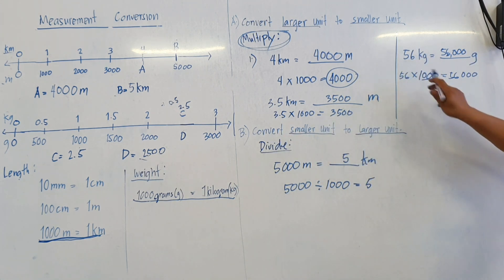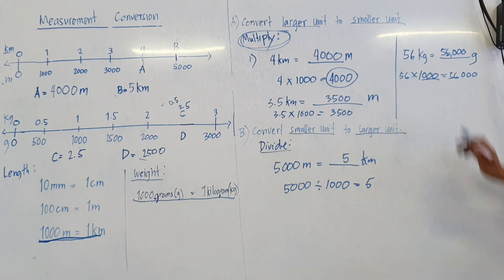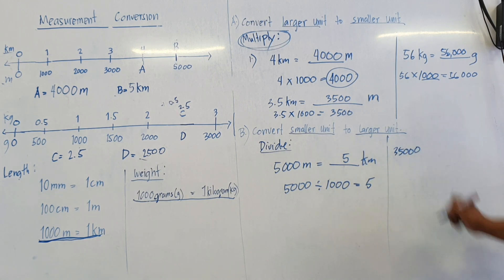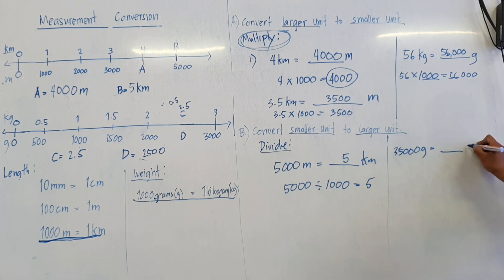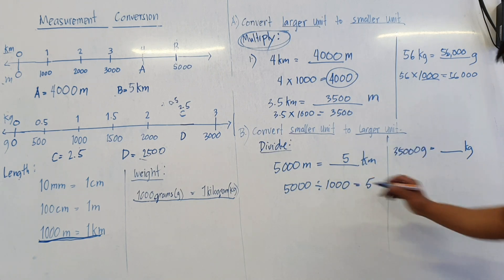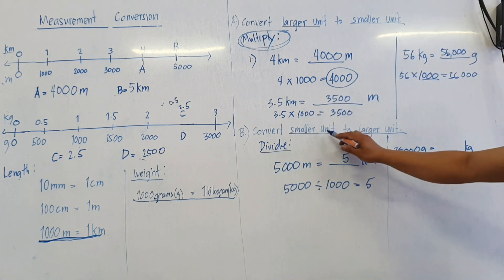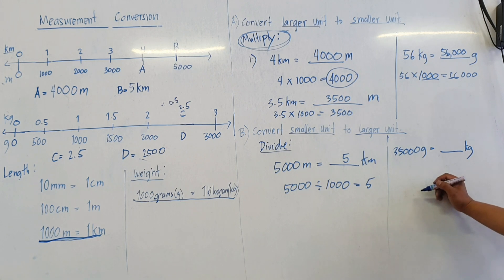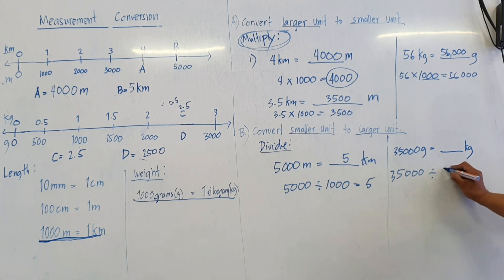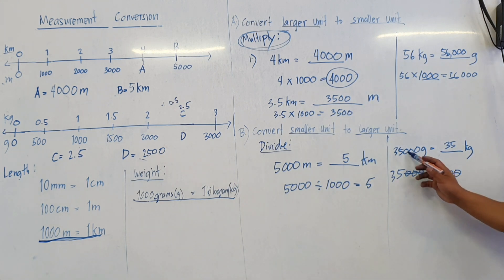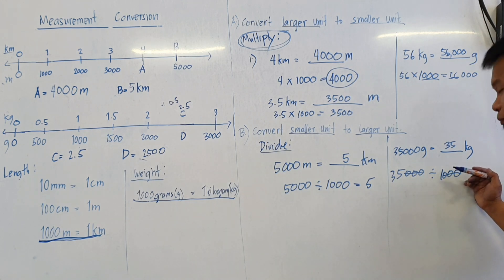How about for converting smaller units to a larger unit? For example, we have 25,000 grams — that equals how many kilograms? We need to divide by 1,000. So 25,000 divided by 1,000. The answer is 25. So 25,000 grams equals 25 kilograms.